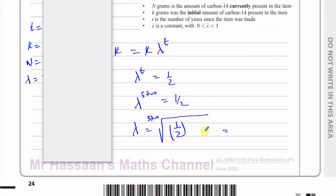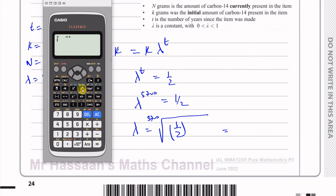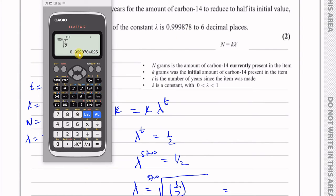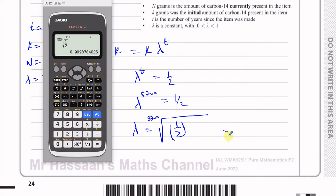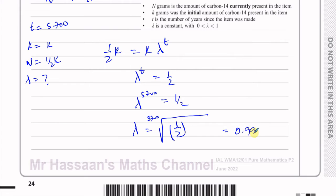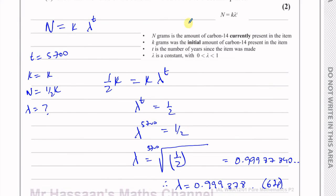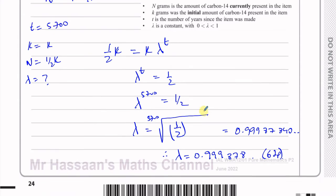We can do that on the calculator using the nth root function with n equal to 5,700 and the value inside being one half. That gives us 0.9998784... so therefore lambda equals 0.999878 to 6 decimal places, as required by the question. It's a somewhat unusual step to take the 5,700th root, but that's what this question requires.